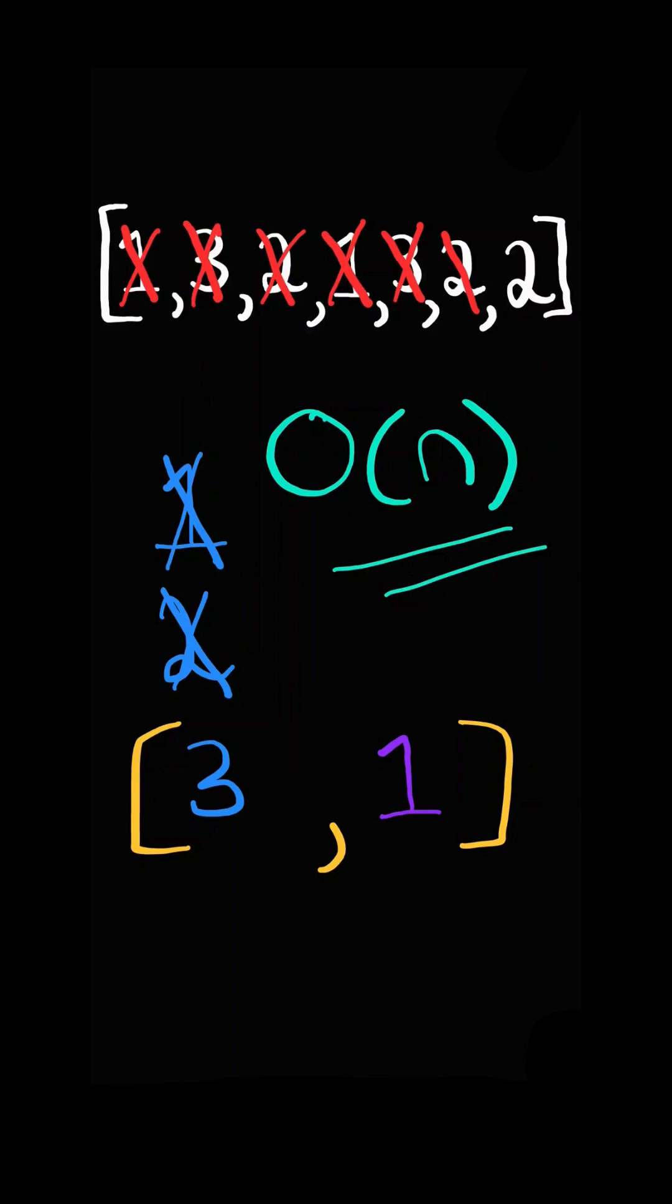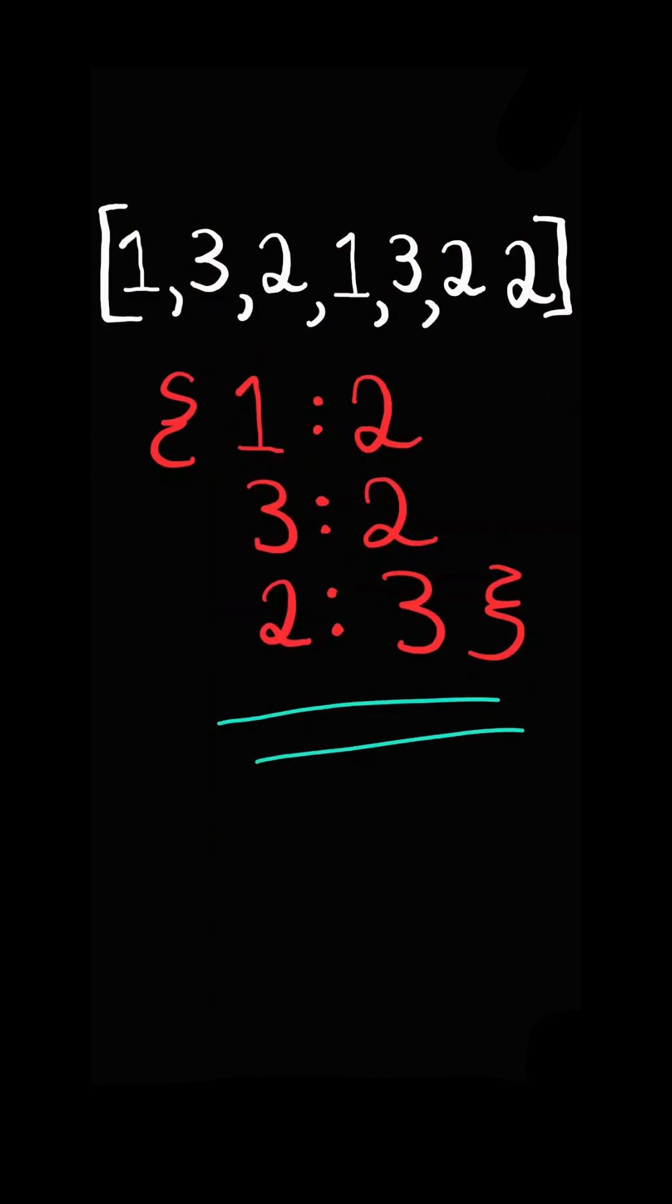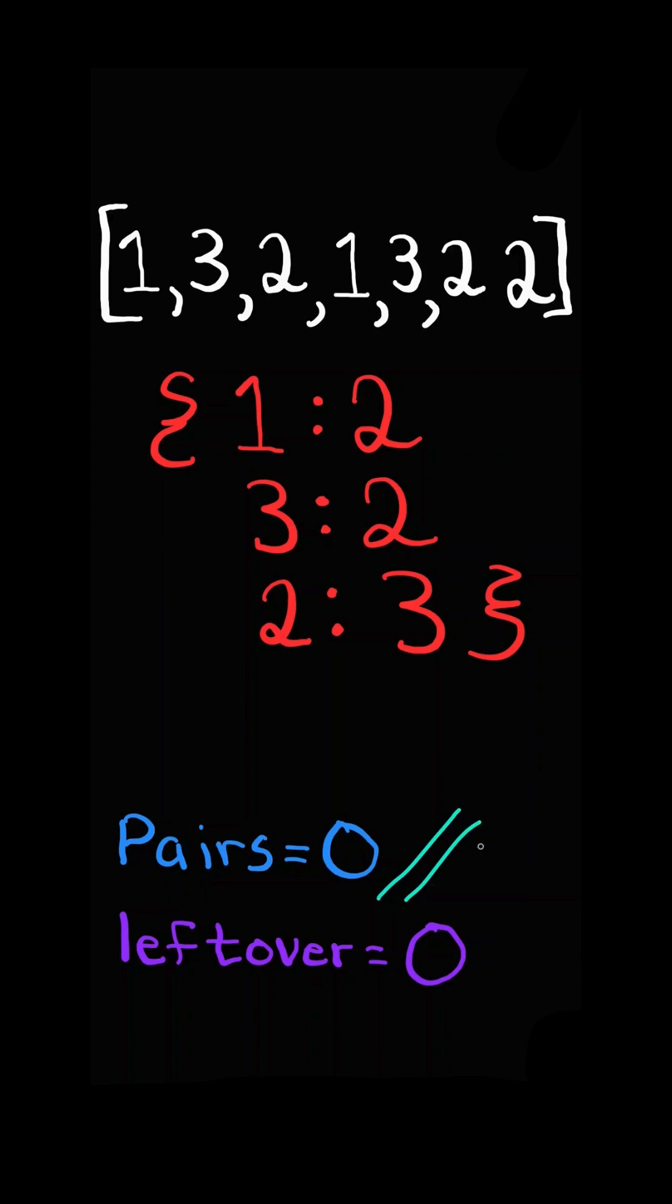We will solve this in O of n time. First, we create a frequency dictionary where we count the occurrences of each number. We will initialize two variables, pairs and leftovers.